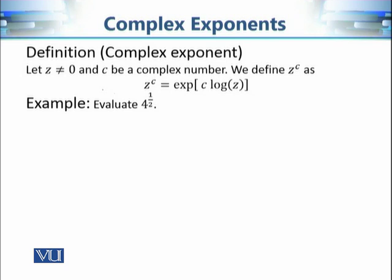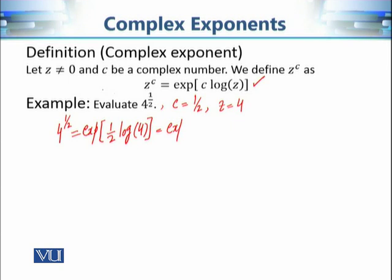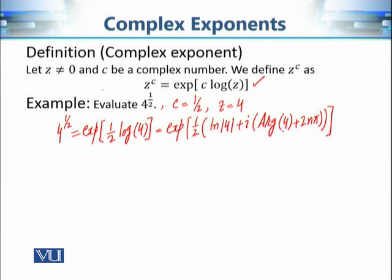Let's evaluate 4 raised to power 1/2. According to this definition, 4 raised to power 1/2 equals exponential of c times log of z, where c equals 1/2 and z equals 4. So we get exponential of (1/2) times log of 4. Now, log of 4 equals the natural log of 4 plus iota times the principal argument of 4 plus 2n pi. Since 4 is on the positive real axis, its principal argument is 0.